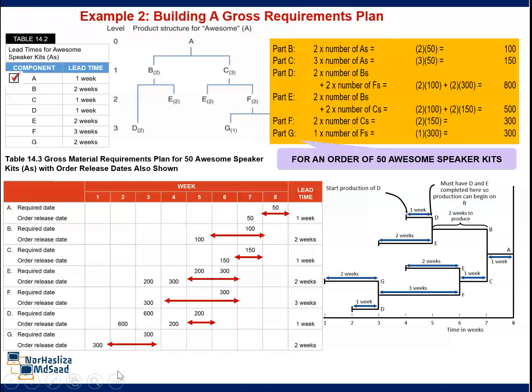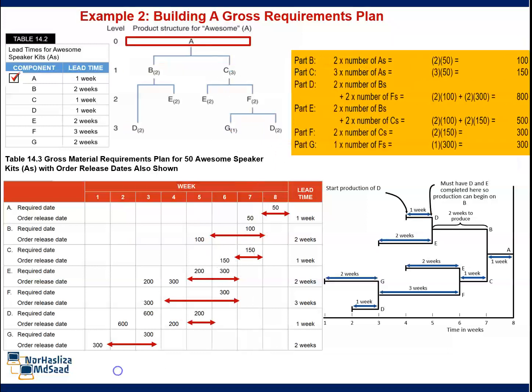If you want 50 units of A at Week 8, you must start assembling A in Week 7. Thus, in Week 7, you will need 100 units of B and 150 units of C. These two items take 2 weeks and 1 week respectively to produce.